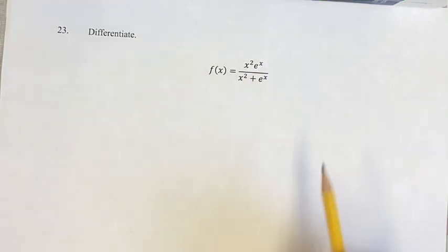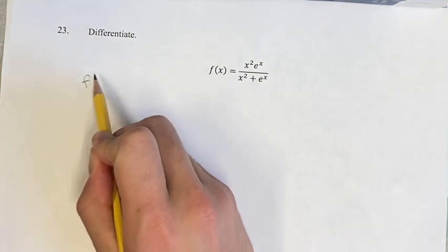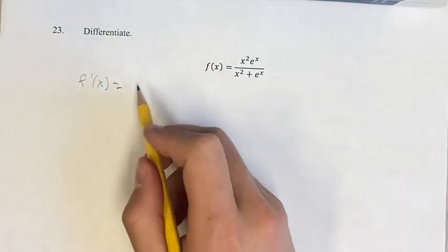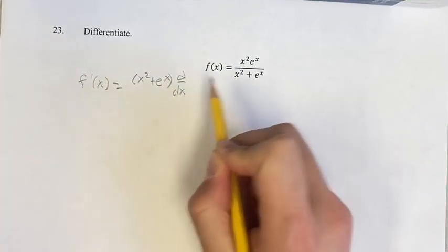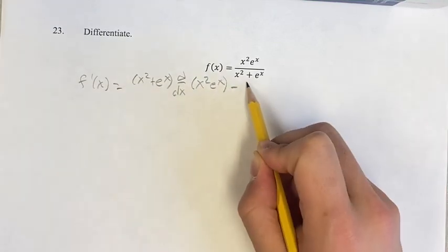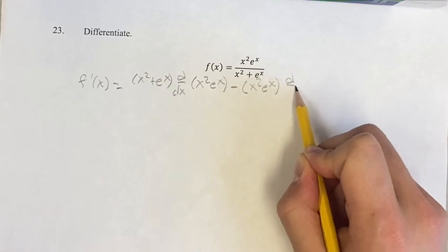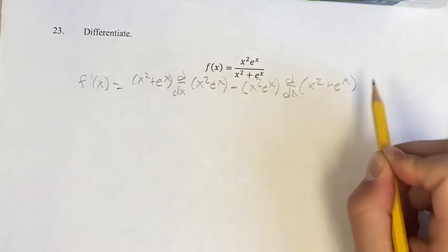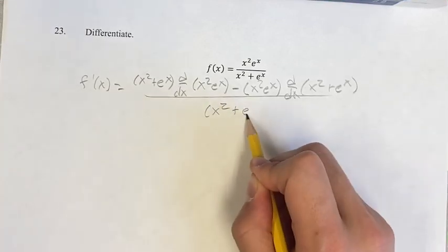Since we have a fraction here, we're going to use the quotient rule, which means we're going to have the denominator times the derivative of the numerator, minus the numerator times the derivative of the denominator. And this is all going to be over the square of the denominator.